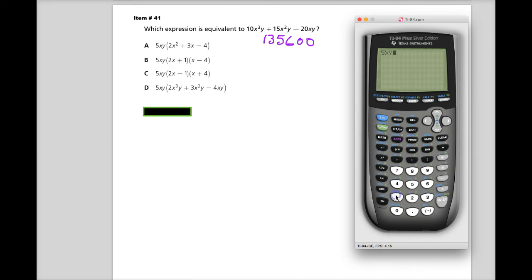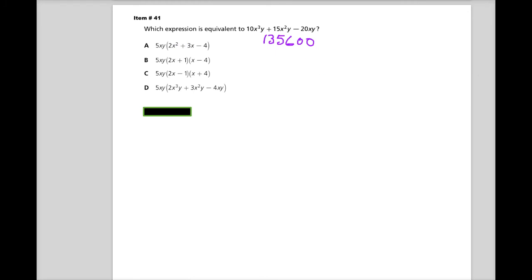So now we'll just try the answer choices and see if we can make that number appear again. And if we can, you know that's the answer. So 5XY and then close it. I'll do 2X squared plus 3X minus 4. Not some weird thing, 4 minus 4. So I'll hit enter and you'll notice that's the same exact number. So I can say that A is the correct answer.